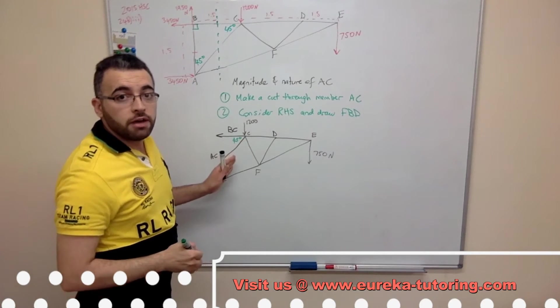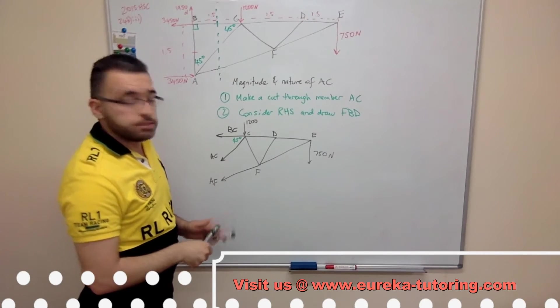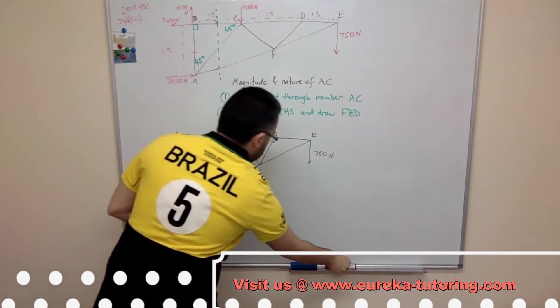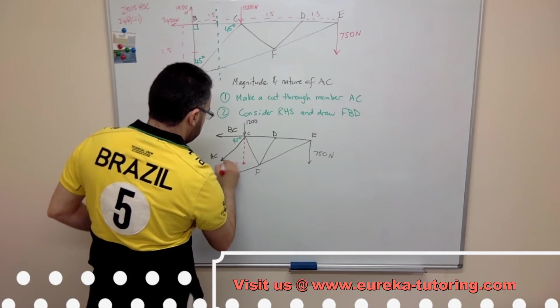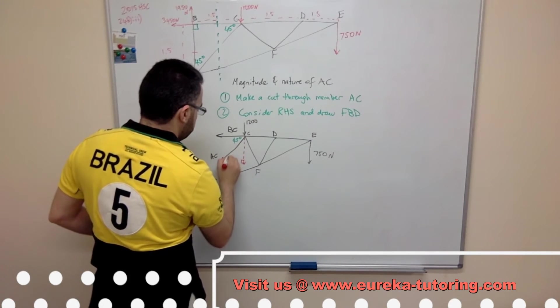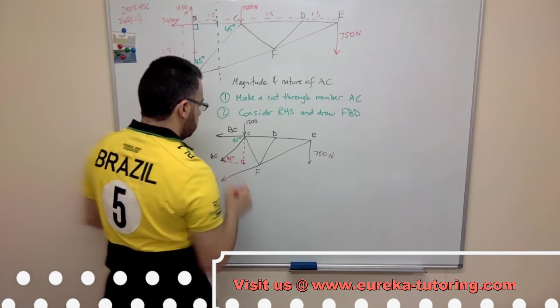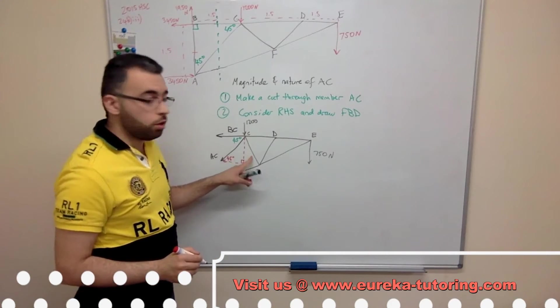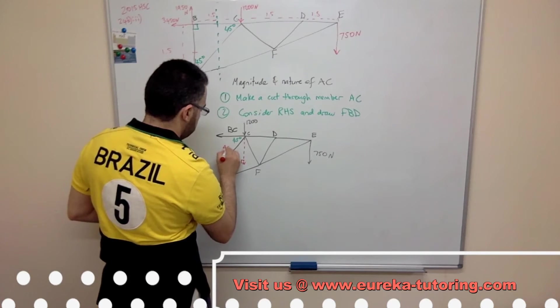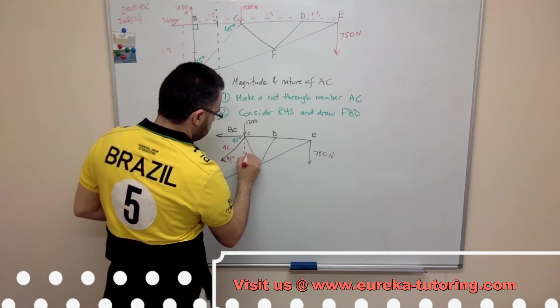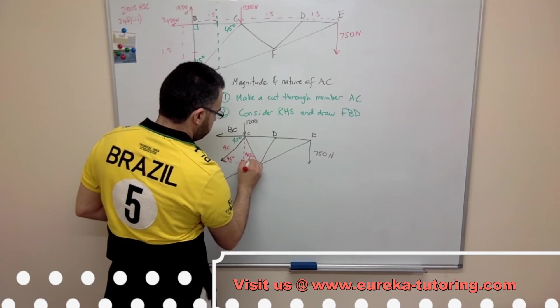Now I need to create my vertical component of AC. Create a triangle, this is a right angle, this will be 45 degrees. This side will be sine because it's opposite over hypotenuse. So that will be AC sine 45.